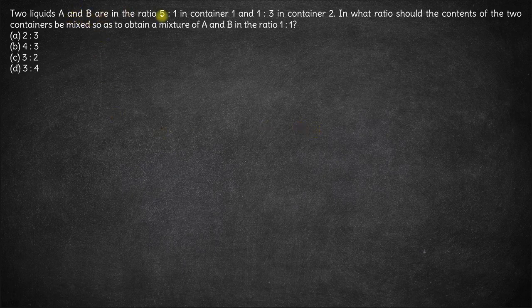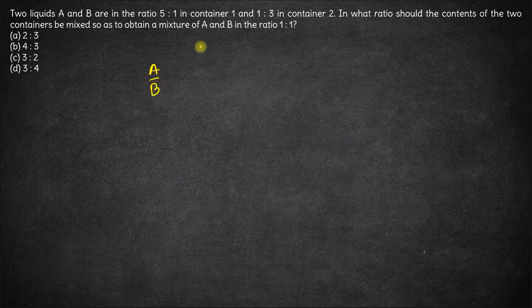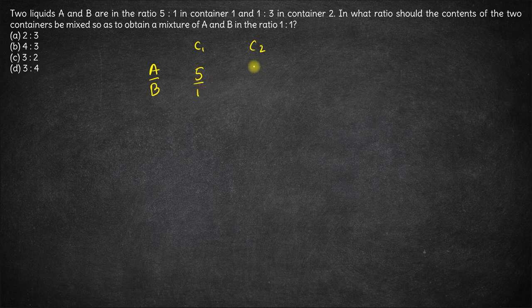Hi, here we have two liquids A and B are in the ratio of 5 is to 1. Two liquids A and B, container 1, container 2. In container 1, they are in the ratio of 5 is to 1 and in container 2, they are in the ratio of 1 is to 3.